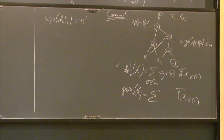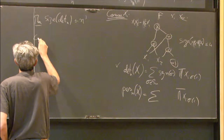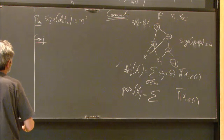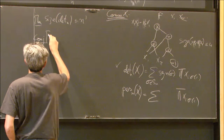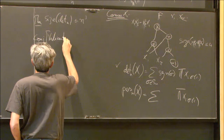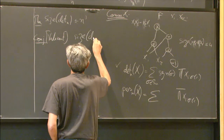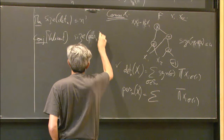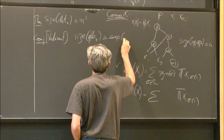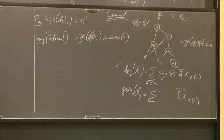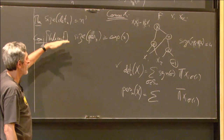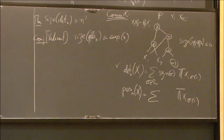Valiant's conjecture is that the permanent cannot be done in polynomial size — in fact it's conjectured to be exponential. The best known is N squared times 2 to the N via the Ryser formula (inclusion-exclusion). This is the major question in computational complexity.